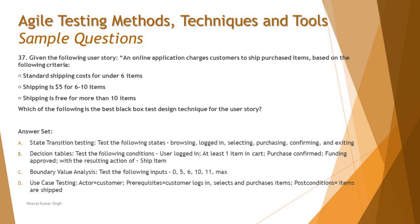Option B is decision table testing with conditions: user logged in, at least one item in the cart, purchase confirmed, funding approved — with the result action of shipping items. But that's more of a transition flow, not a decision table, because a decision table is condition-based action output. Option C is boundary value analysis with inputs: 0, 5, 6, 10, 11, and maximum — covering parameters on each boundary, inside and outside. Don't worry about the edge values like 0 and maximum; it's always the edge cases we take.